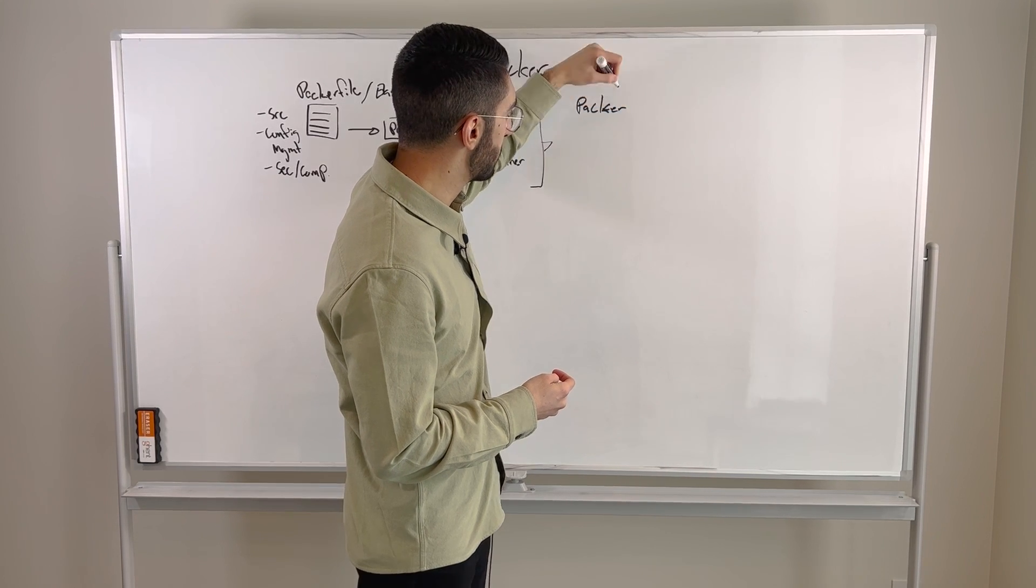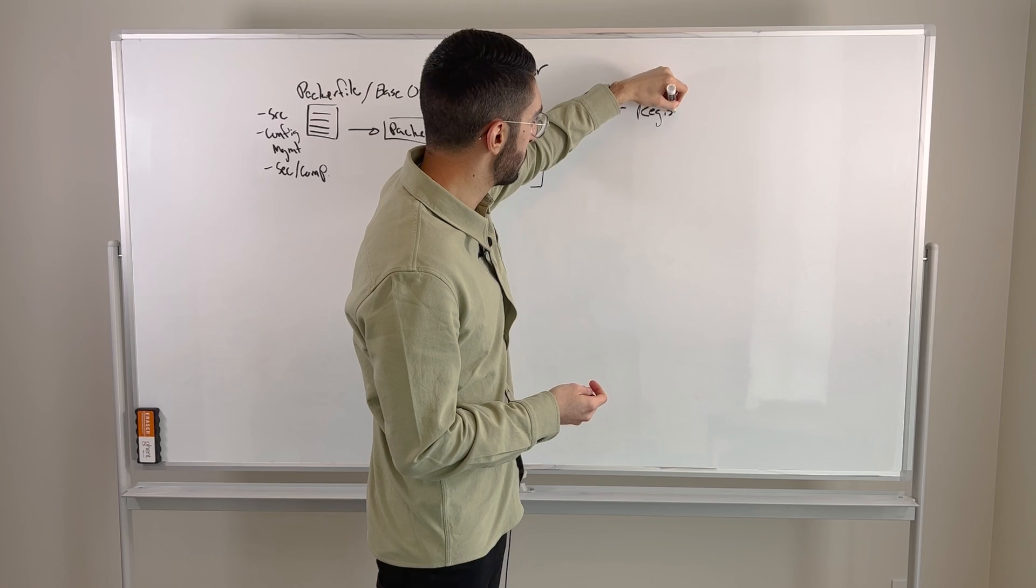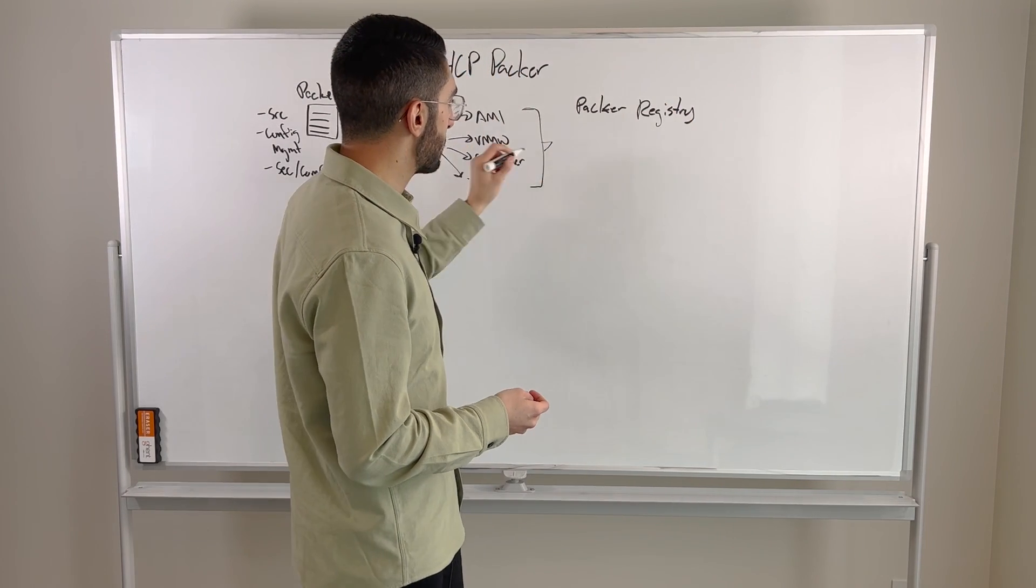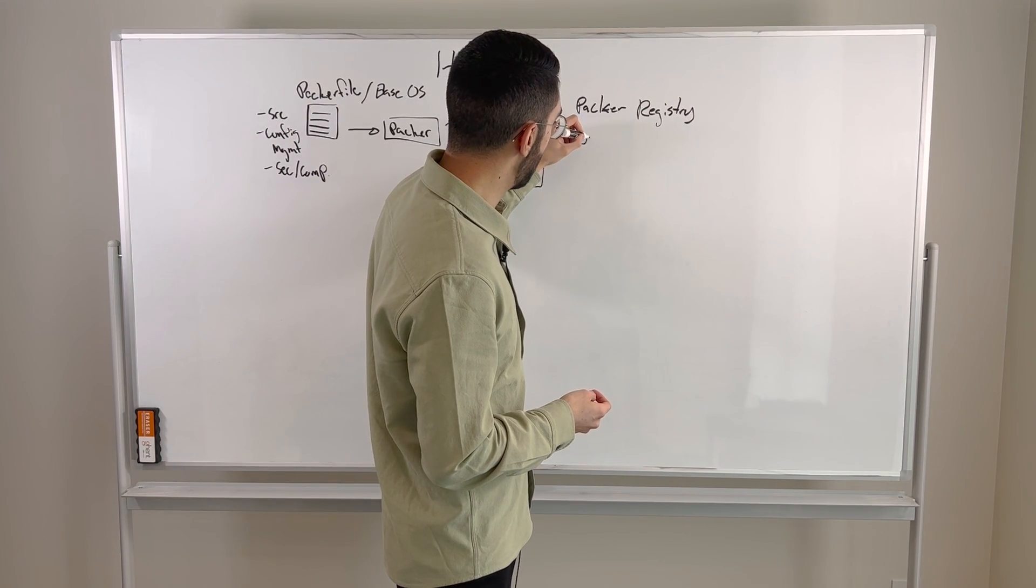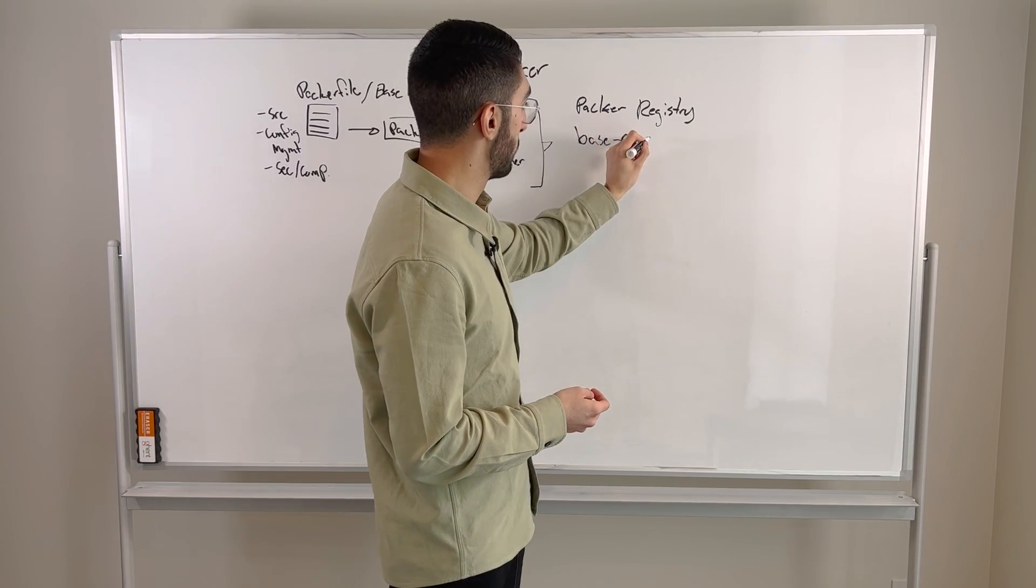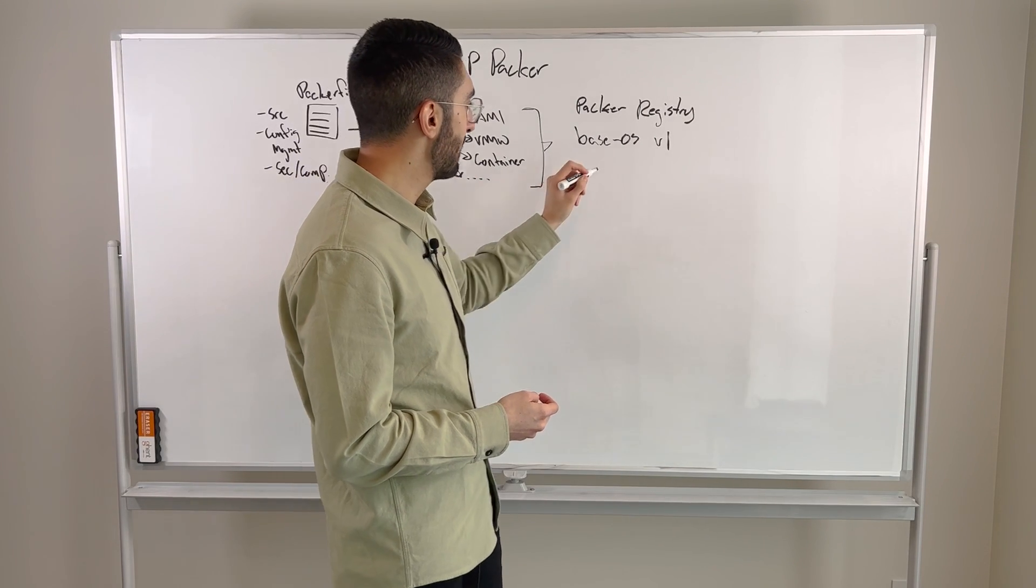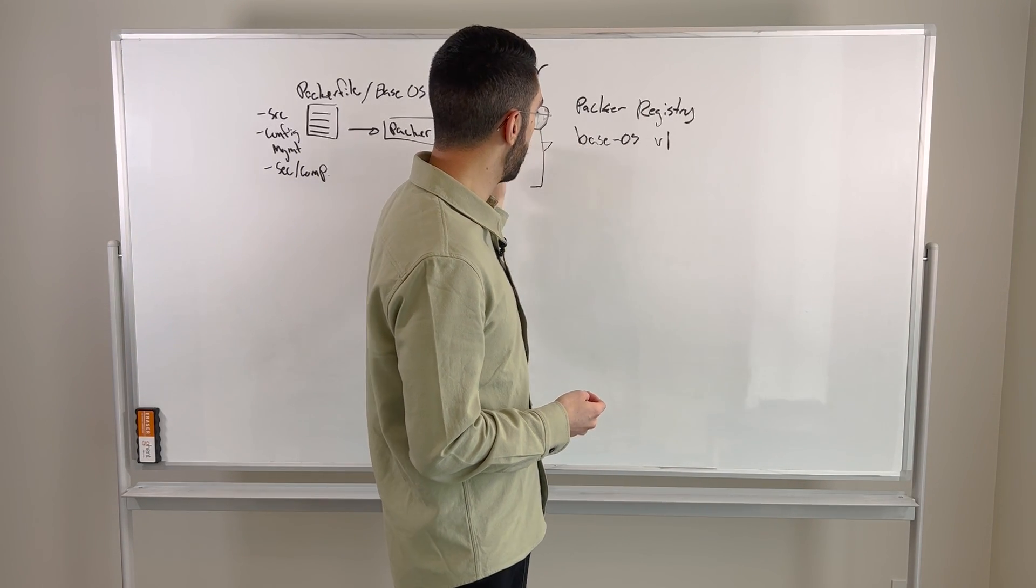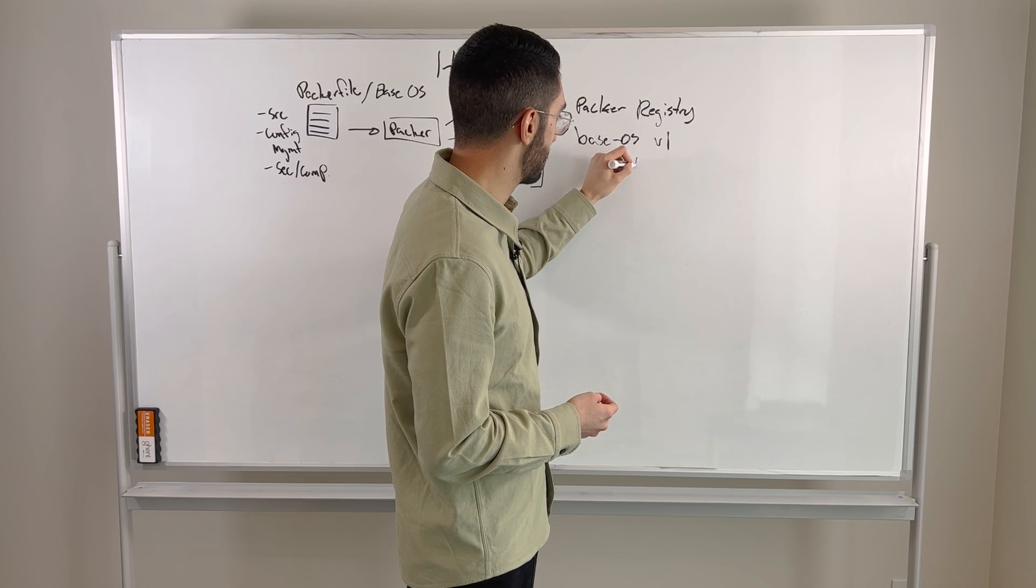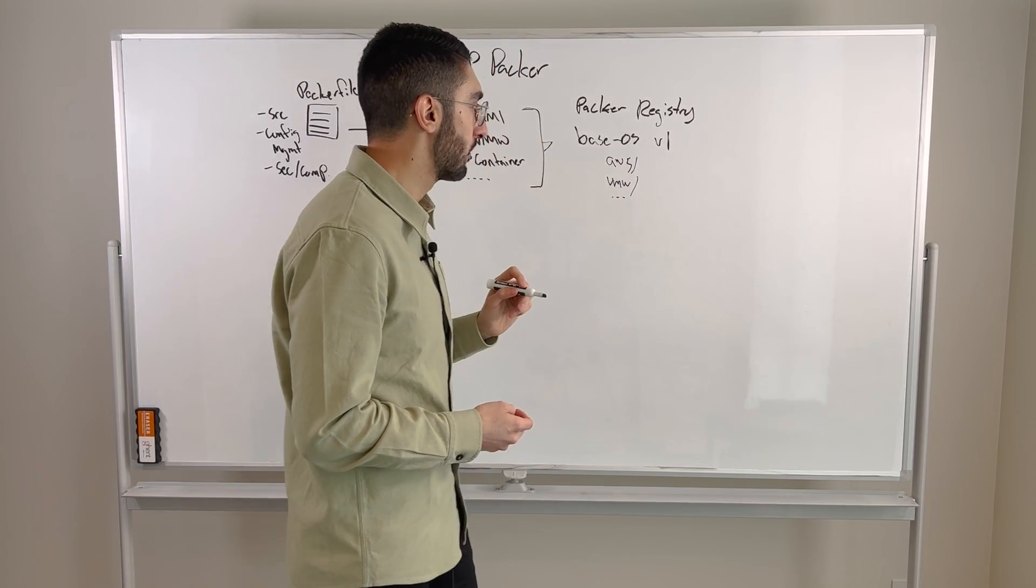And this is cloud hosted as part of the HashiCorp cloud platform. So we can create a registry and then we publish to this and say, this is our base OS as an example. This might be version one of that based on all of the configuration we have. And then we have an instance of that for various environments. We have an AWS image in this case, we have a VMware image, and so on.